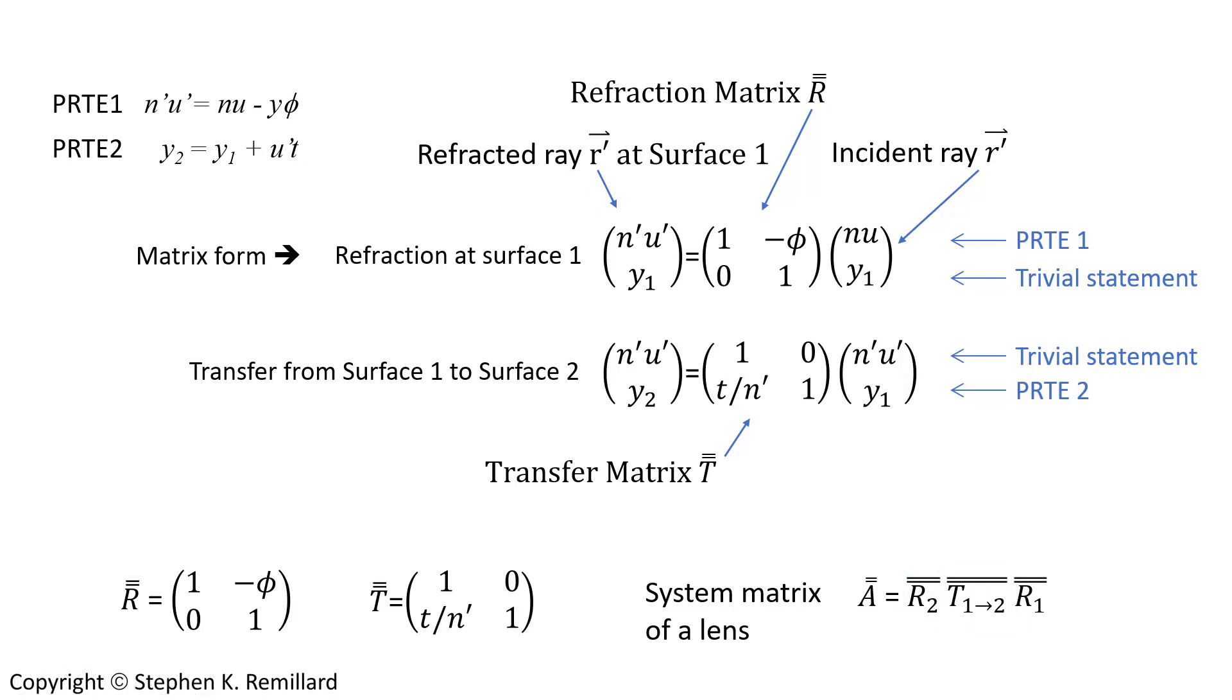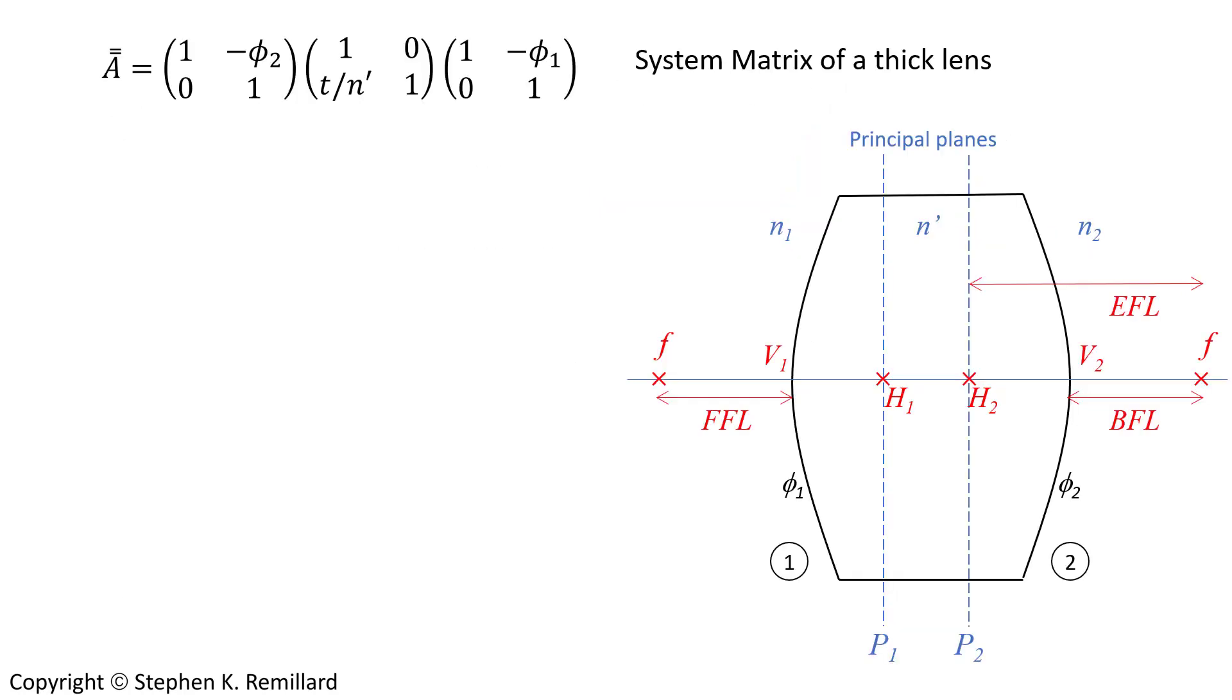Applying those three matrices in a row like that gives you the description of the entire system. What happens to the ray between arriving and departing that lens? You have refraction at surface one, the transfer, and the refraction at surface two, and work out that three matrix multiplication to have the system matrix. Put a red box around it because that's the general expression for the system matrix of any lens.